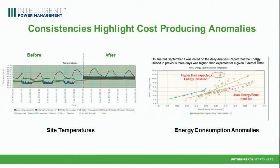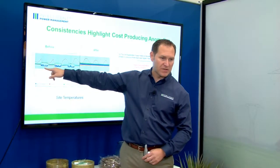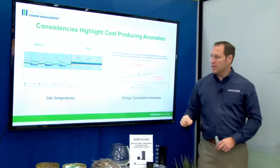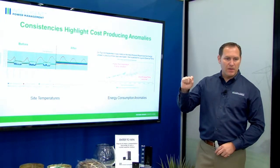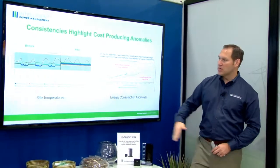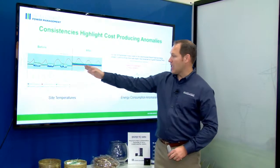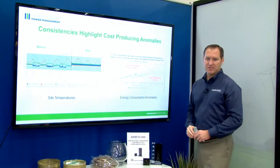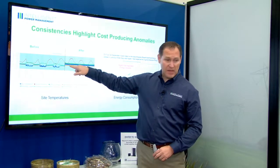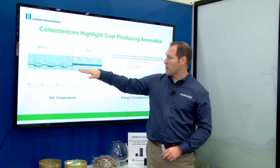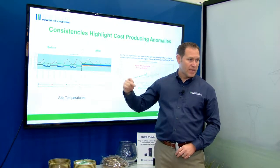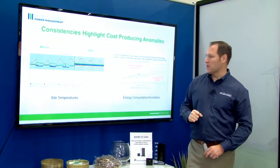But if you look at the daytime, it's different — the temperature of the blue is not quite the same. What we hyper-focused on is driving efficiencies in how the site operates so we can look for cost-producing anomalies. After the IPM solution, it's very consistent. The only thing that adjusts is outdoor temperature, whereas the indoor temperature stays very consistent. This allows us to rapidly pick out anomalies in the way the site operates.